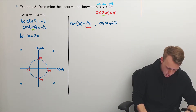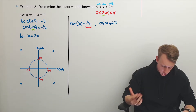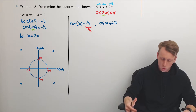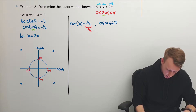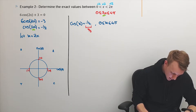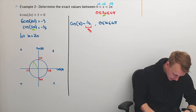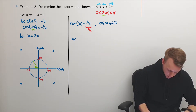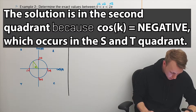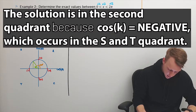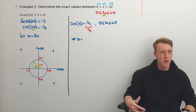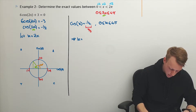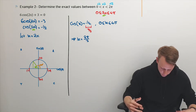Now I can go ahead and solve this. This has to do with my 60-30 triangle — specifically it's going to be 30 degrees or π/3 radians. I'll draw up the unit circle: π/3 radians is 60 degrees. So I can see that k is equal to 120 degrees, which is 2π/3. There's my first solution.